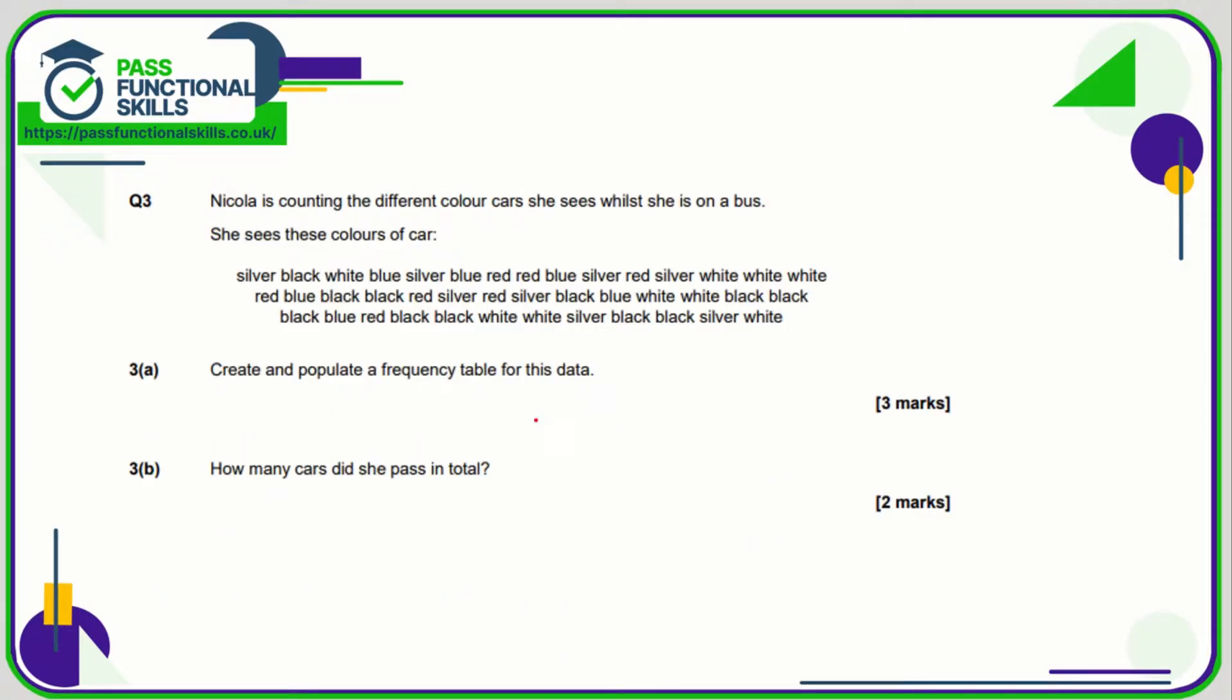Question number three. So we're going to create and populate a frequency table for this data. So what I'm going to do is the first thing I've noticed is that there's silver, there's black, there's white, there's blue, and there's red. I think that's all. So I'm just going to put a tally mark next to, I mean, I could just go through and just count up all the silvers. In fact, that's arguably easier for this question. But remember when Nicola's doing this, she doesn't know what there is to follow. So she just sees a silver car and she logs silver. Then black, then white. I'm just going to speed this up a little.